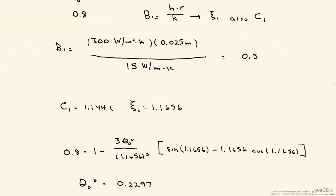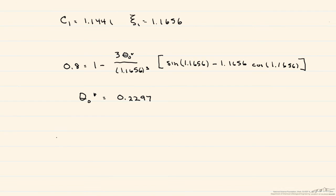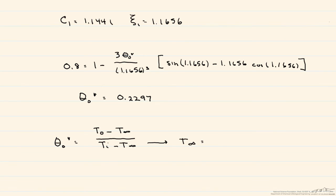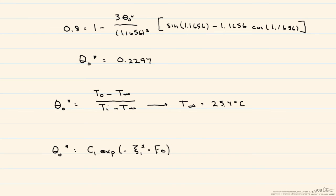This theta star 0 value helps us in two ways. First, theta star 0 is defined as the centerline temperature minus the bulk temperature, divided by Ti minus T infinity. Since we're given the centerline temperature and the initial temperature, we can solve for the temperature of the bath, which is equal to about 25.4 degrees Celsius. Additionally, we can get the Fourier number, which is equal to alpha times t divided by r squared.